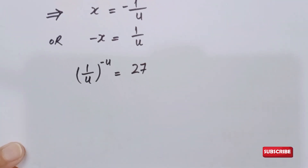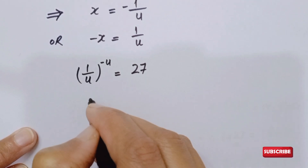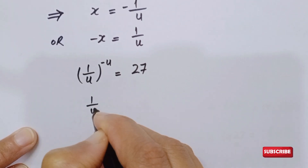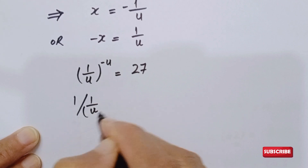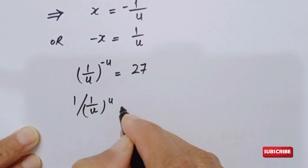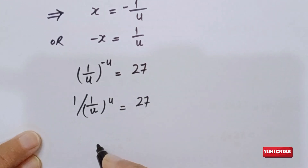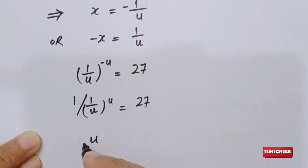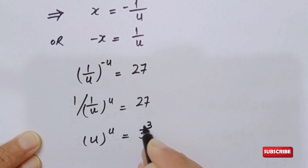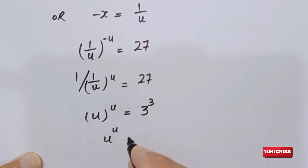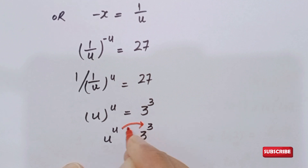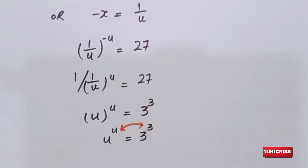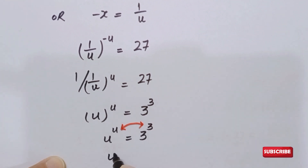Bringing 1 over u to the denominator, the power becomes positive: 1 over (1/u)^u equals 27, which simplifies to u to the power u equals 27. We can write 27 as 3 to the power 3. So u^u equals 3^3. Since the base form and the exponent form are the same on both sides, we can compare them directly, giving us u equals 3.